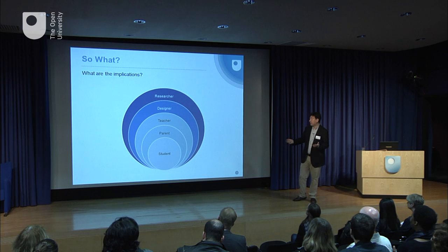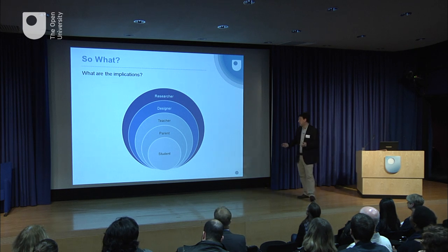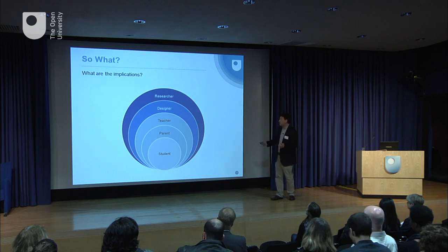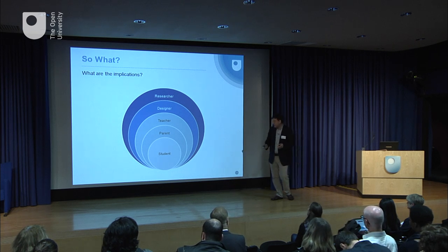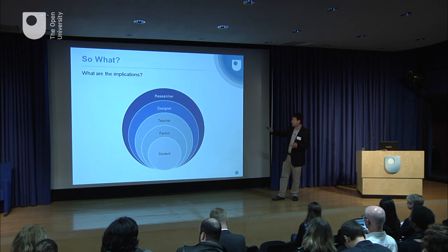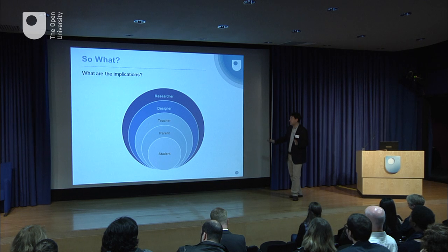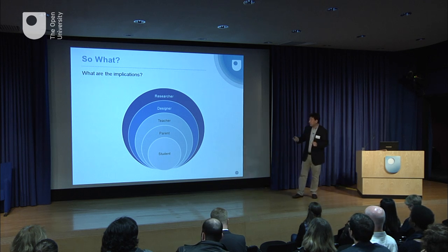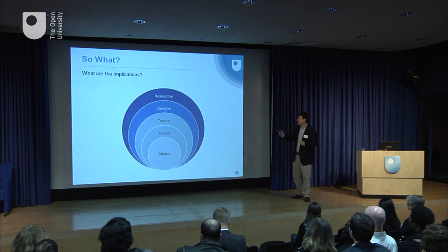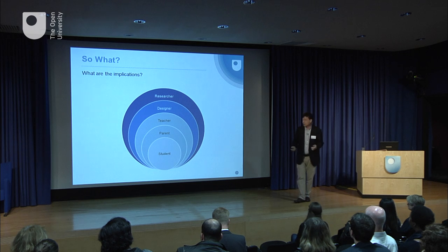What are the implications? We can see that as we talk about the development of emotions and the role it plays, the effects will be felt at the student level, student families, parents, teachers, course designers, and researchers. When we talk about emotional competence, we should have emotionally competent designers and emotionally competent researchers creating environments to support learning.